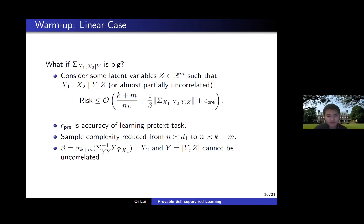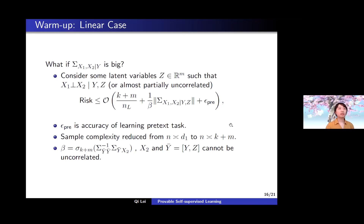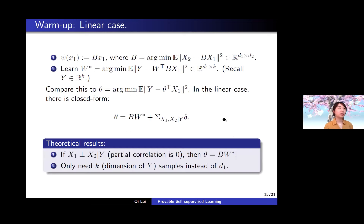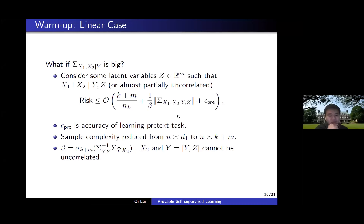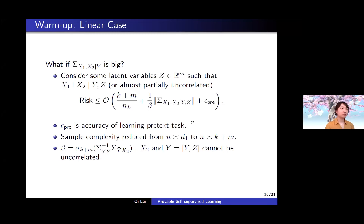What is the scaling of epsilon_pre? It scales as roughly one over the number of unlabeled data. Since it's not the focus of this work, we did not specify it exactly, but it captures the accuracy of learning Psi and the complexity of Psi. For example, if we use a neural network for the pretext task, epsilon_pre will be the complexity of the neural network divided by the number of pretext task samples. We usually assume we have lots of data for the pretext task since it's essentially free.